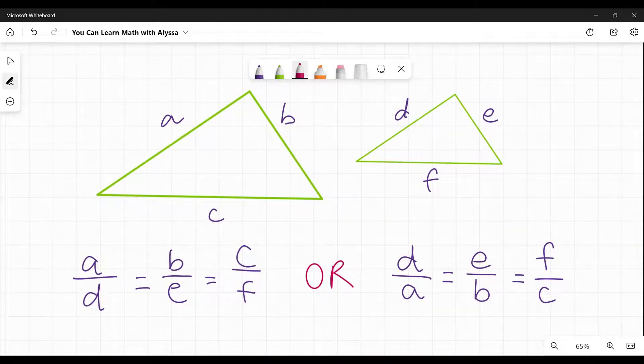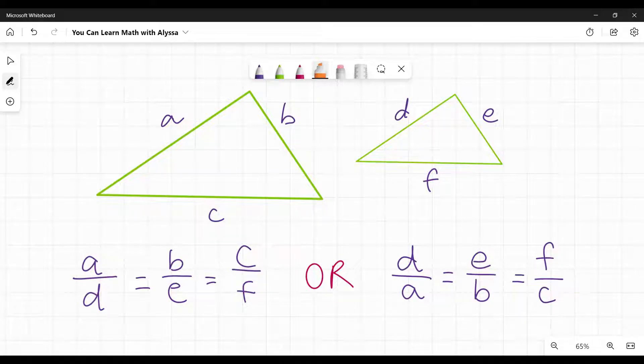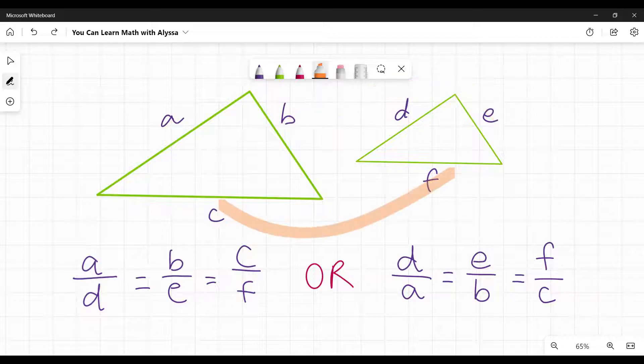So here is a representation of what that proportional lengths of sides means. You can set any of these up. You have to just go in the same direction for each set. In this case, I'm going from the bigger A to D, B over E, C over F, or I can start with the smaller and go the other way. D is to A as E is to B as F is to C.